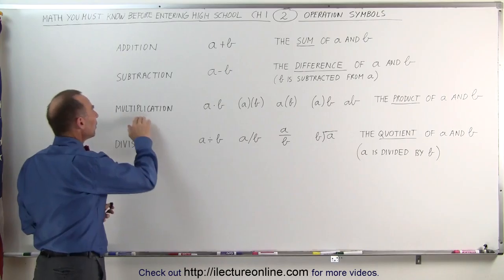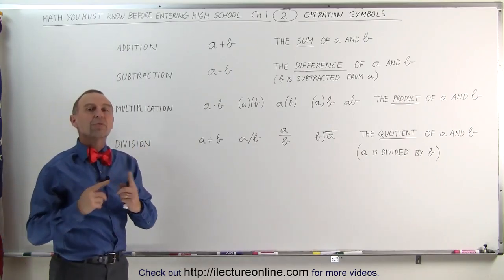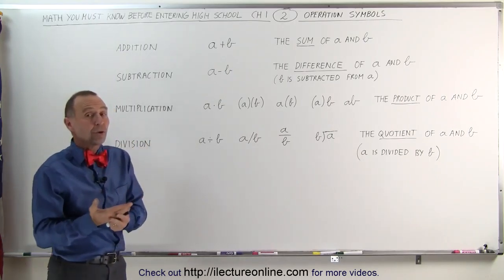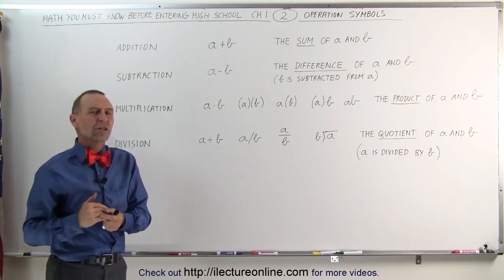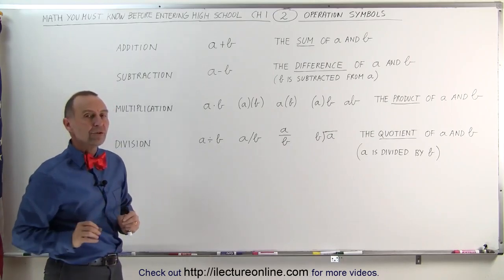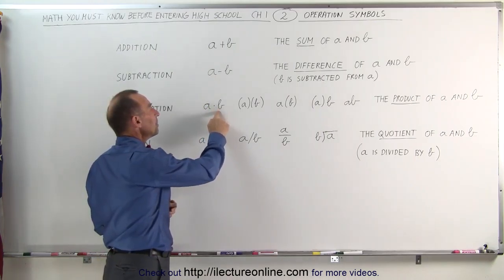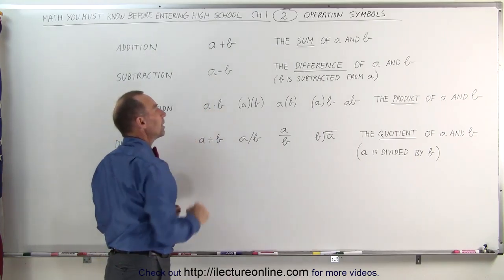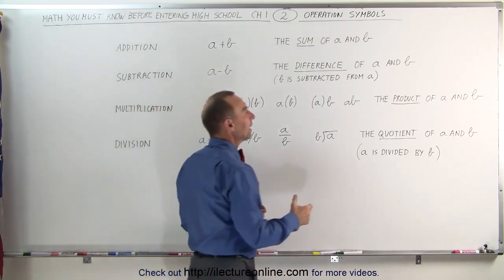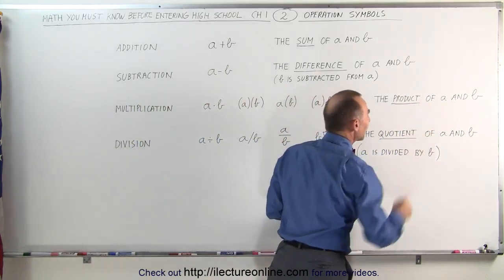When we write the multiplication, notice we no longer use the x symbol for multiplication. The reason why we don't is because the letter x is used a lot in algebra, so we don't want to confuse things. Instead, we use the dot. a dot b means a multiplied with b, or we can also say it's the product of a and b.